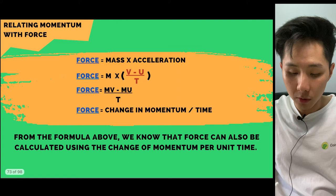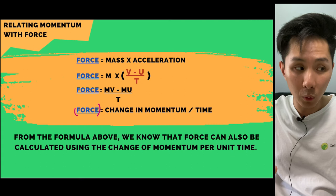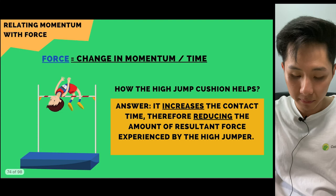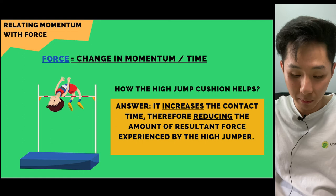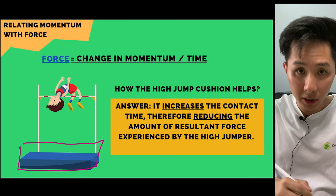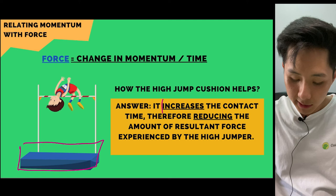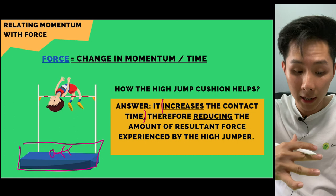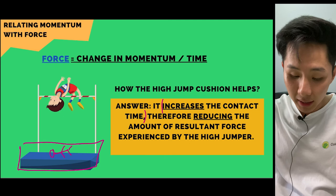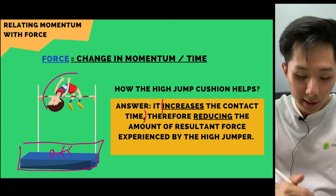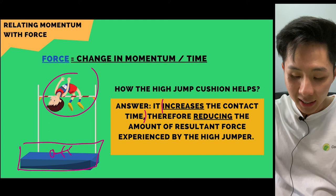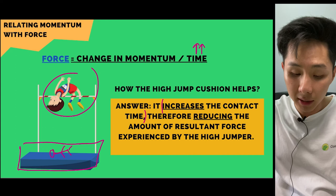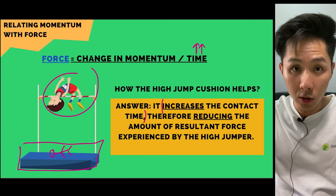So force is also equal to change in momentum divided by time: F = Δp / t. An application: a high jumper landing on a cushion — the cushion increases contact time. When contact time increases, the force experienced by the jumper is less, because the denominator in F = Δp / t is larger. That's why the jumper is safer with a cushion.